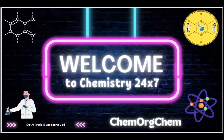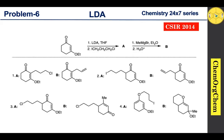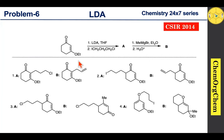Hi everyone, welcome back to Chemistry 24/7. Today we are going to see one interesting problem. This is a problem from CSAR 2014. According to this question, a starting ketone reacts with LDA followed by an electrophile to produce compound A. Compound A further reacts with Grignard reagent followed by acid workup to produce compound B. There are four options — let's find the correct one.